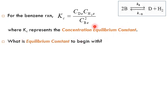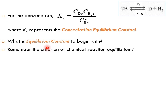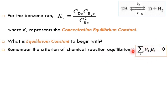The concentration equilibrium constant Kc is well known from chemistry. However, the more fundamental parameter is the thermodynamic equilibrium constant. Going back to thermodynamics, the criterion of chemical reaction equilibria states that the summation of all chemical potential mu_i times stoichiometric number nu_i equals zero at equilibrium, where mu_i is the chemical potential for species i and nu is the stoichiometric number.